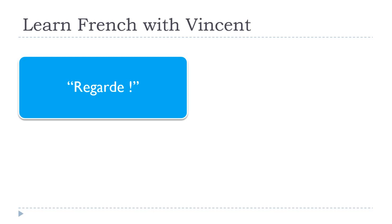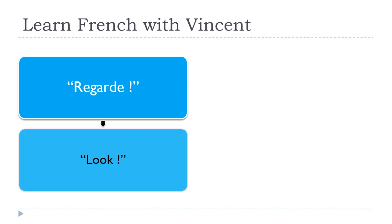Let's take a simple example: REGARDE. You can see it's an imperative form — you've got the point d'exclamation at the end. It's like an order, a strong advice. REGARDE — Look. This is direct speech.